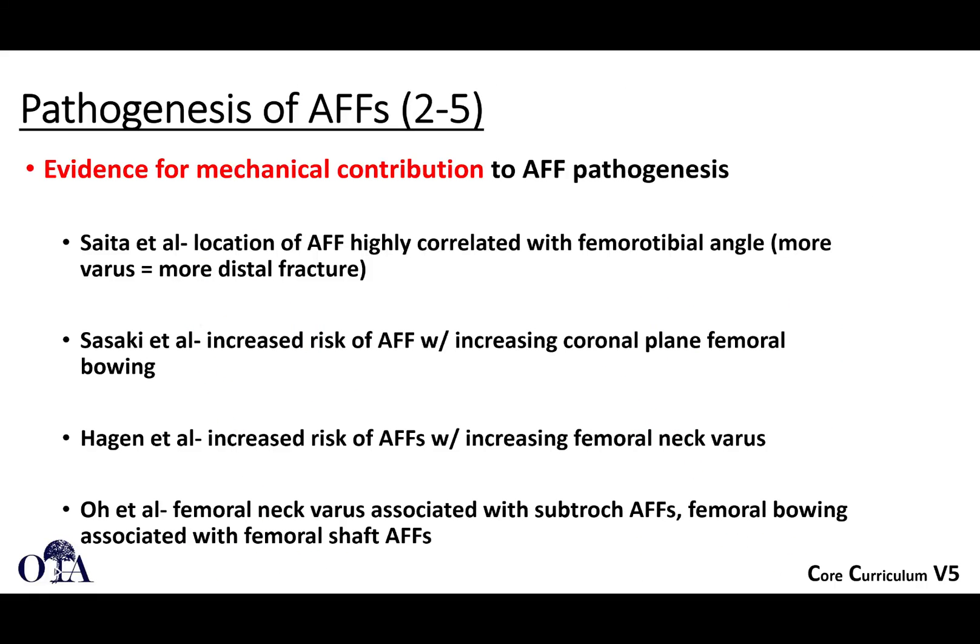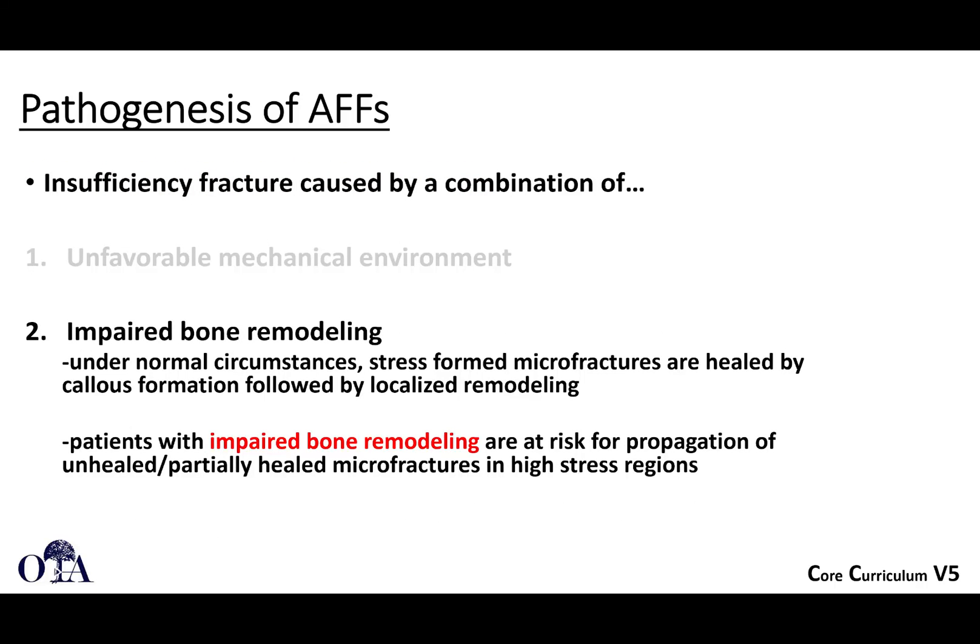There is evidence for this. In one study, the location of the atypical femur fracture was highly correlated with femoral-tibial angle — more varus equaled a more distal fracture. A second study showed increased risk with increasing coronal plane femoral bowing. A third study showed increasing femoral neck varus increased atypical femoral fractures. And a fourth study found femoral neck varus associated with subtrochanteric AFF and femoral bowing associated with femoral shaft AFF — all showing this link between anatomy and fracture risk.